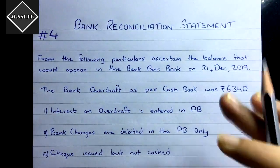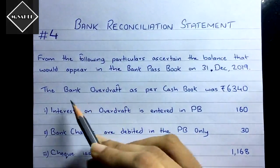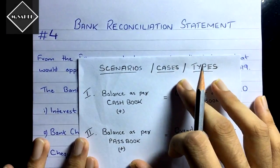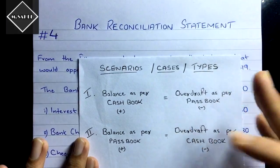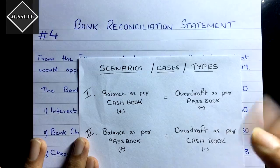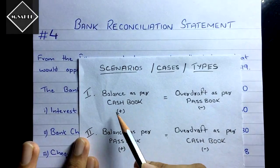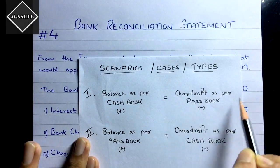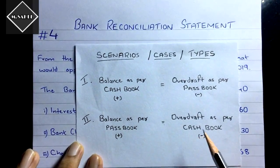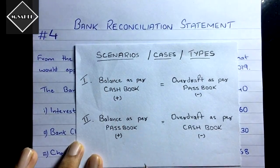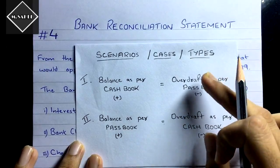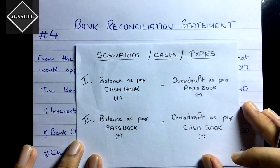To avoid confusion when the unfavorable balance is given, stick to the scenarios. There are only two scenarios. The simple technique is: if you have been given overdraft as per passbook, assume you have been given balance as per cash book. And if you have been given overdraft as per cash book, assume you have been given balance as per passbook. Then do it accordingly — just change the book and everything is the same. If it's the first scenario, move only the CB finger; if it's the second scenario, move only the PB finger.